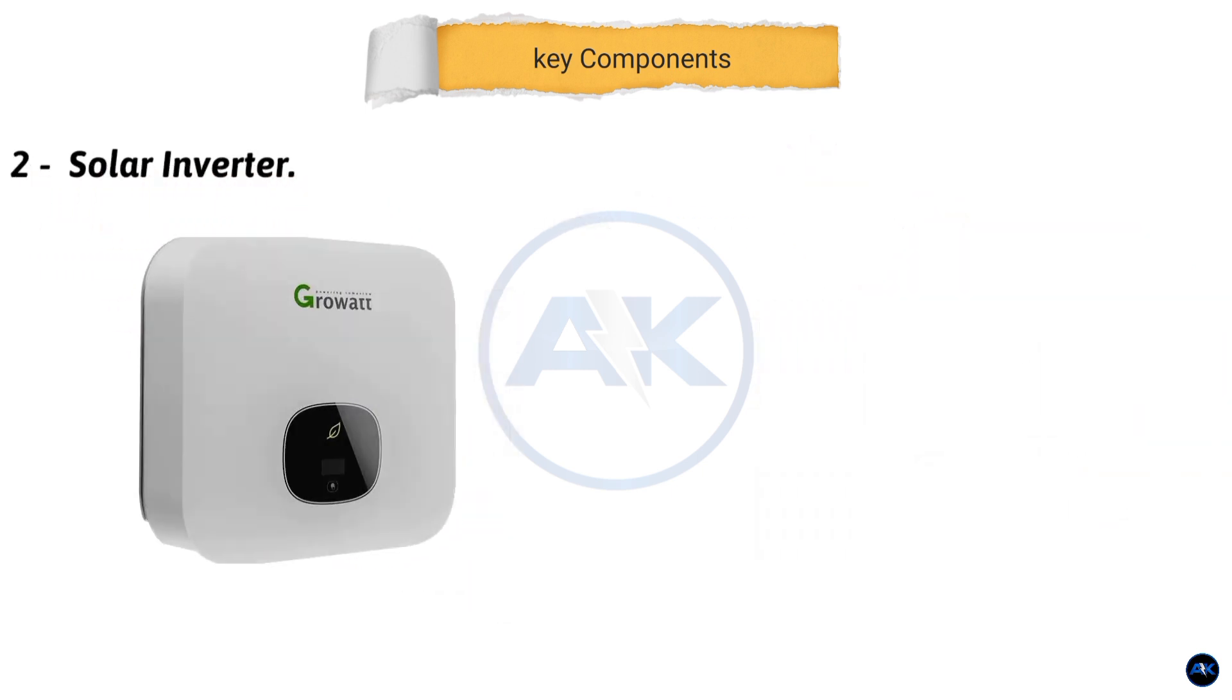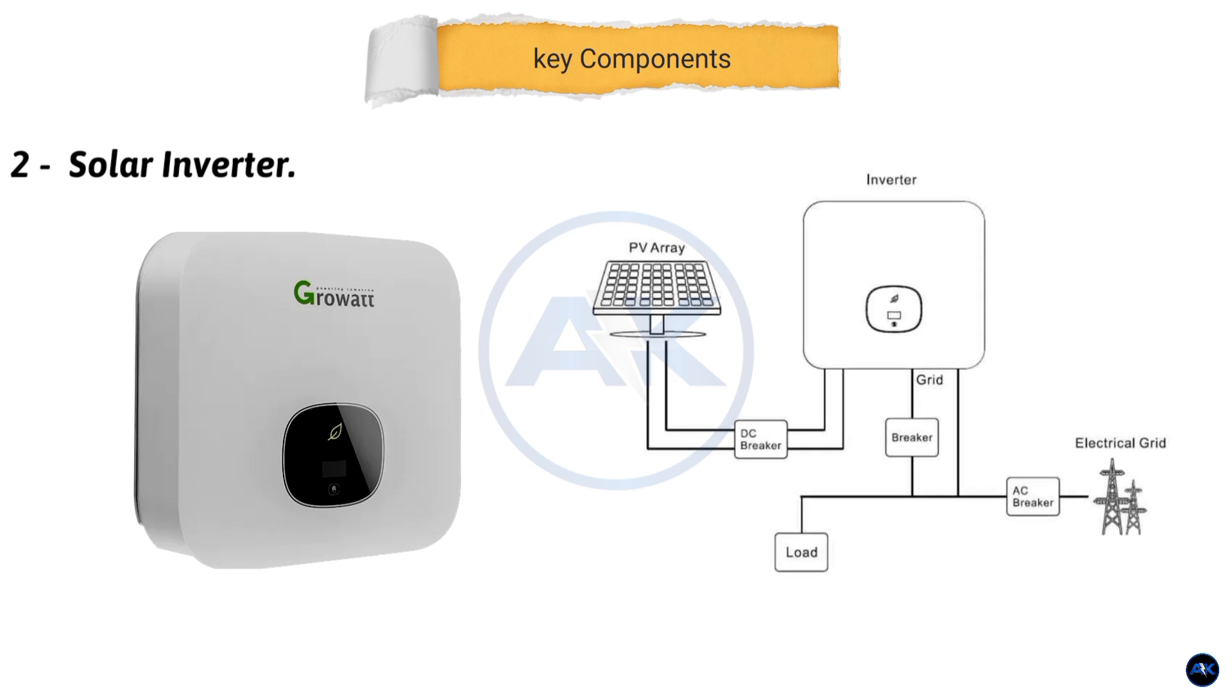Second, inverter. This crucial device converts the DC electricity from the panels into AC electricity for your home. We're using a Growat MOD 10KTL3X 10kW on-grid inverter.